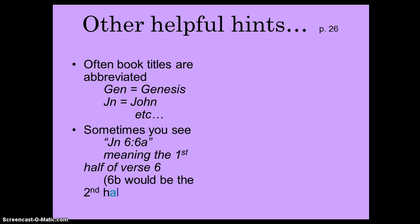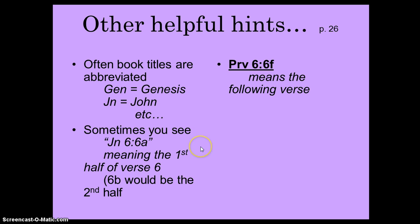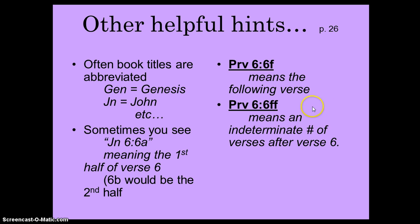Sometimes when putting a Bible verse down, you'll see something like John, chapter 6, colon, and then the verse says 6a. You won't see an 'a' in the Bible — what that means is you're only including the first half of the sixth verse. So 6b would be the second half of that verse. Also, Proverbs chapter 6, verse 6f — the 'f' means you include the following verse, which is verse 7. If you see two f's after a verse number, that means an indeterminate number of verses after verse 6. So it's Proverbs chapter 6, verses 6 and following.